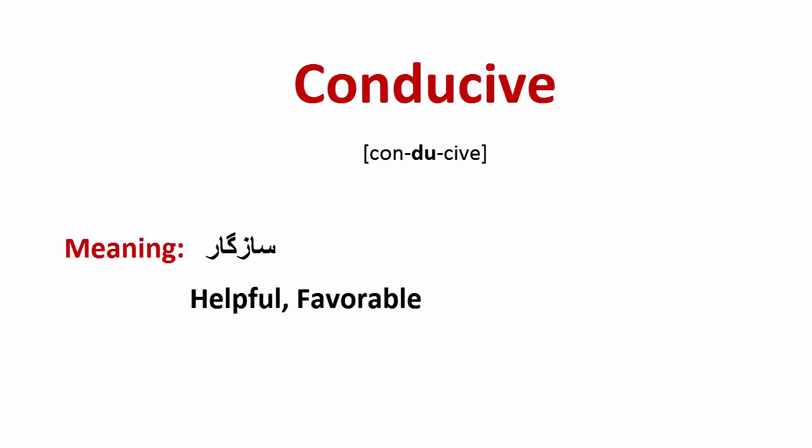Conducive means helpful, favorable. In Urdu, its meaning is 'sazgar' — to create an environment or situation that is favorable or helpful for something else to happen. For example: 'Peaceful atmosphere is conducive to learning' — meaning a peaceful environment is very helpful and favorable for learning.